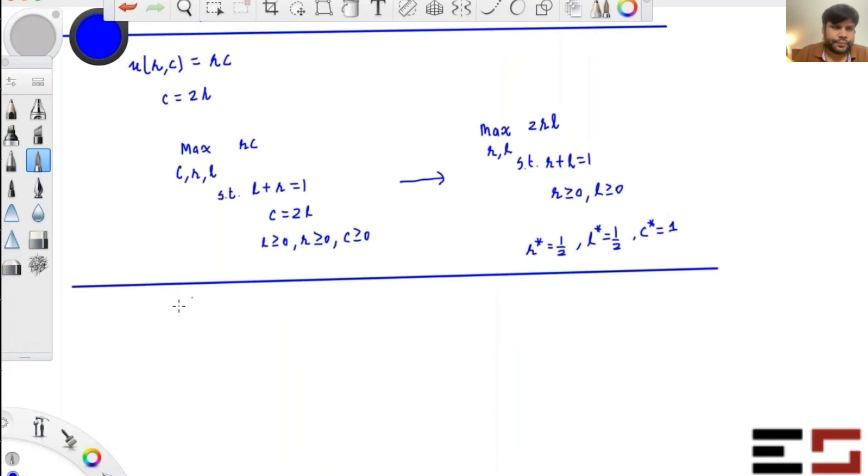So suppose U(R,C) is equal to... Okay, do this. Again, you have one year of time. And I'll give you five minutes to solve this.